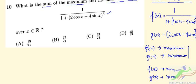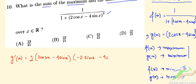g(x) is given. Taking the first derivative, g'(x) will be 2·(2cos x - 4sin x)·(-2sin x - 4cos x). Simplifying, we can take out 2, giving us -8(cos x - 2sin x) times... and then we get the term involving (sin x + 2cos x).